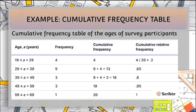To calculate the cumulative frequency, add each frequency to the frequencies in the previous rows. For the first row, the cumulative frequency is 4. In the second row, 9 plus 4 equals 13. In the third row, 3 plus 9 plus 4 equals 16. In the fourth row, 3 plus 3 plus 9 plus 4 equals 19. And lastly, 1 plus 3 plus 3 plus 9 plus 4 equals 20. To find the sample size, add all the frequencies: 4 plus 9 plus 3 plus 3 plus 1 equals 20.